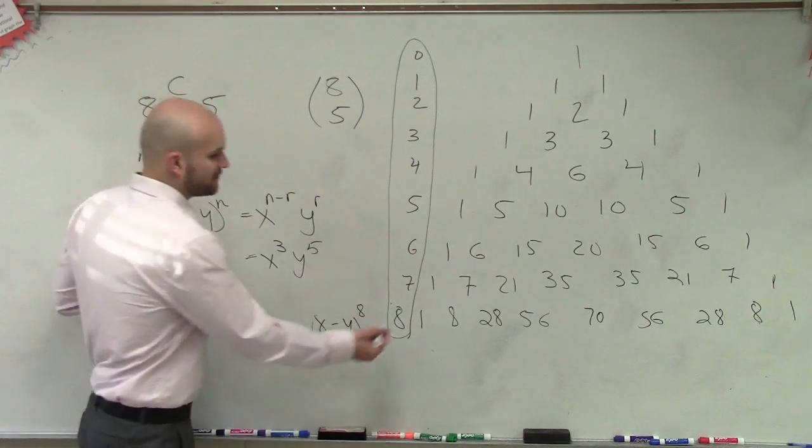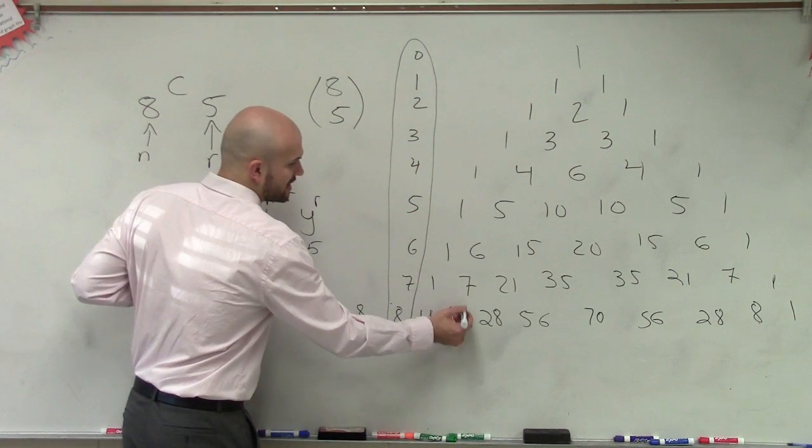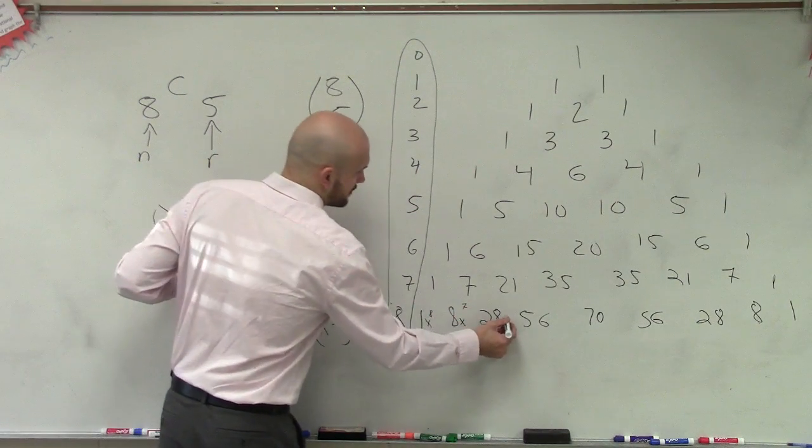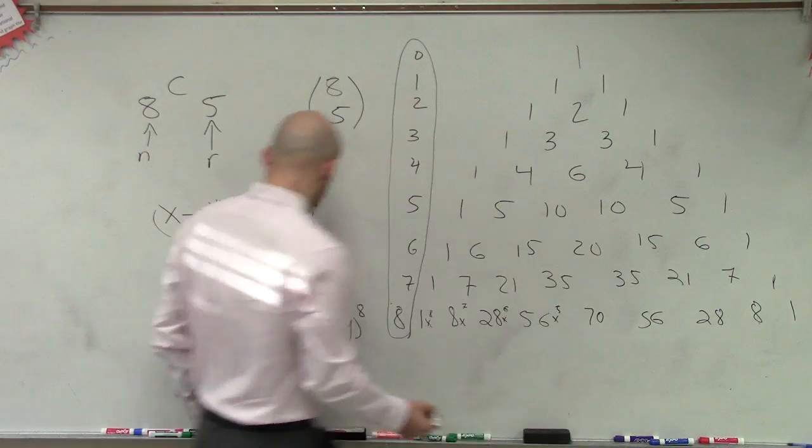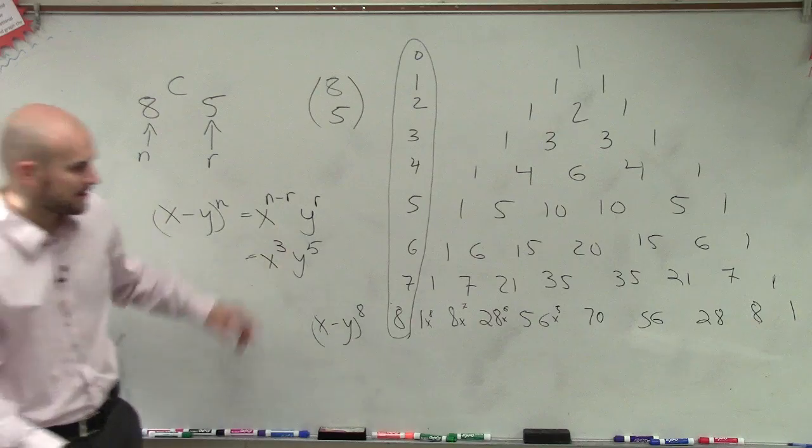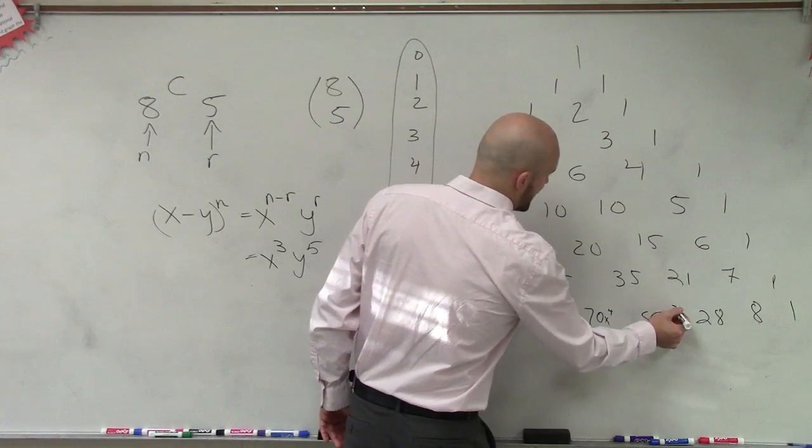So what we can do is if we say, alright, well, if this is x to the 8th, then this would be x to the 7th, x to the 6th, x to the 5th. And what are we looking for, anyways? x to the 3rd. So we say x to the 4th, and then this one would be x to the 3rd.